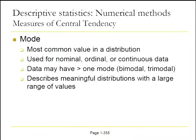The mode is the most common value in a distribution, and it can be used for any of the three types of data we've discussed: nominal, ordinal, or continuous data. Distributions can have more than one mode, and those are termed bimodal or trimodal distributions.